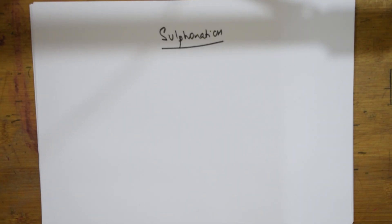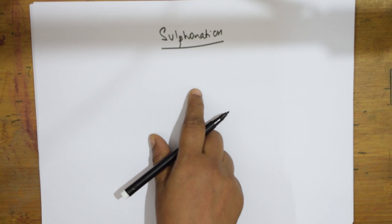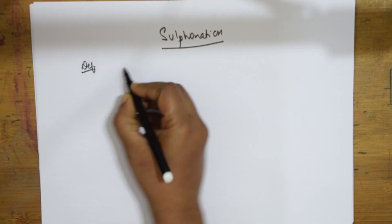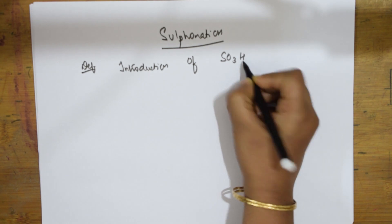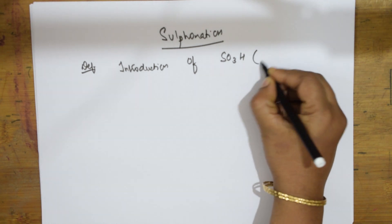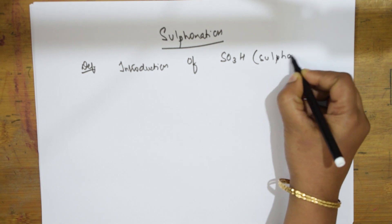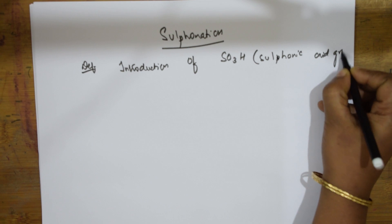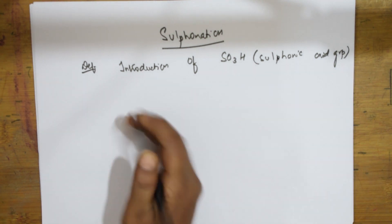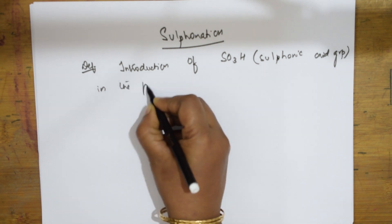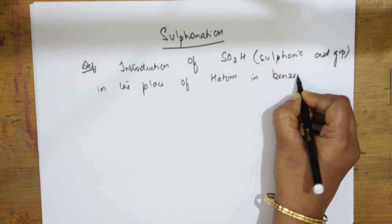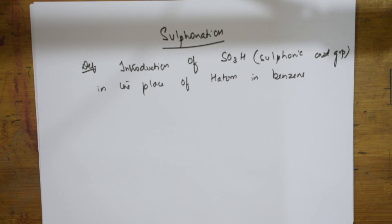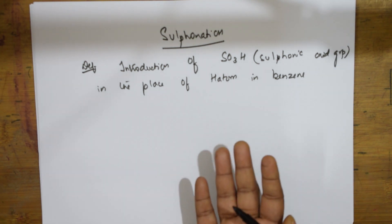Welcome back students to one more electrophilic substitution reaction of benzene: sulfonation, along with its mechanism. Sulfonation is the introduction of the SO3H group — called the sulfonic acid group — in the place of a hydrogen atom in benzene. The product we get is benzene sulfonic acid.